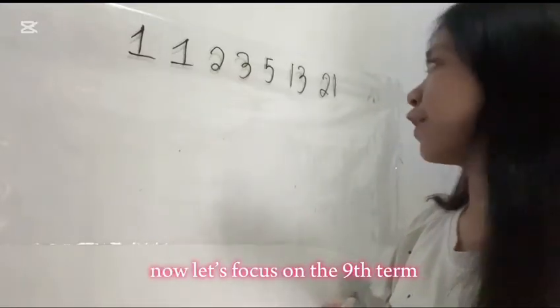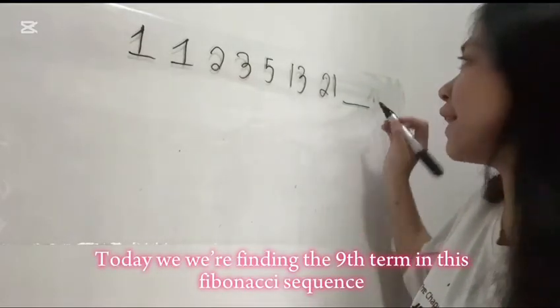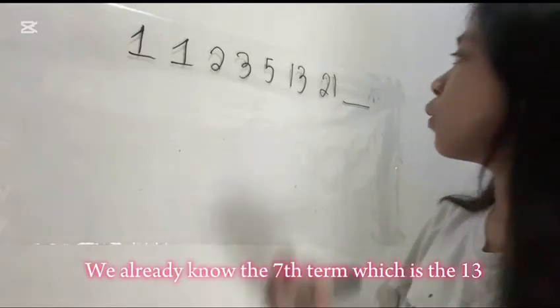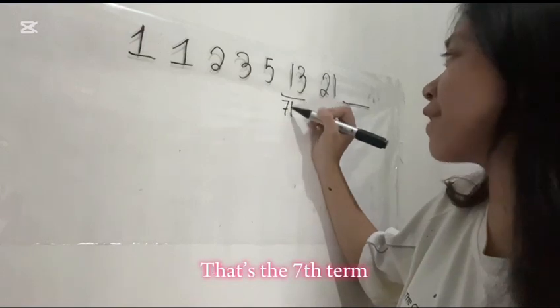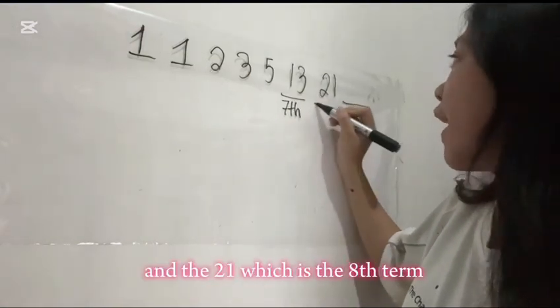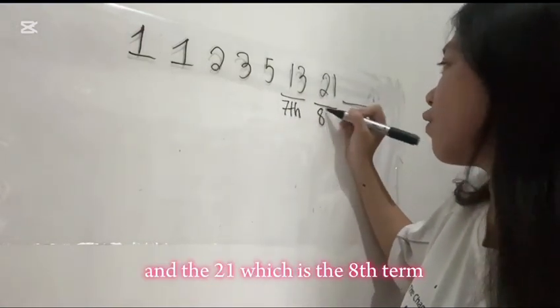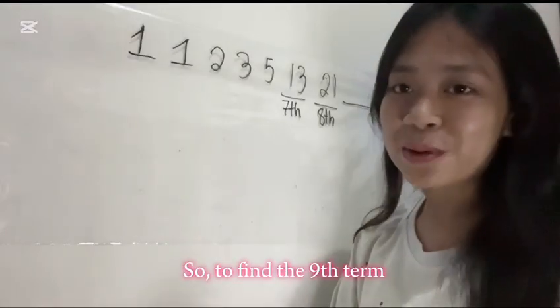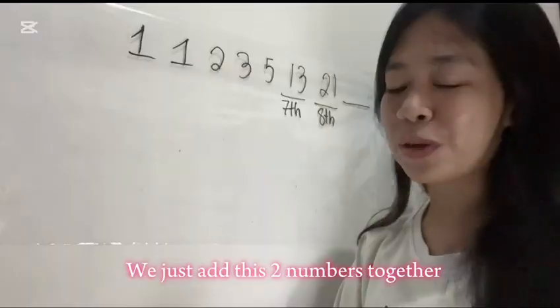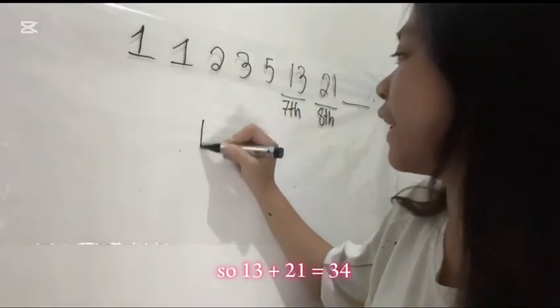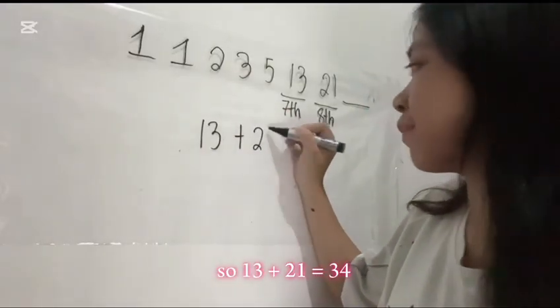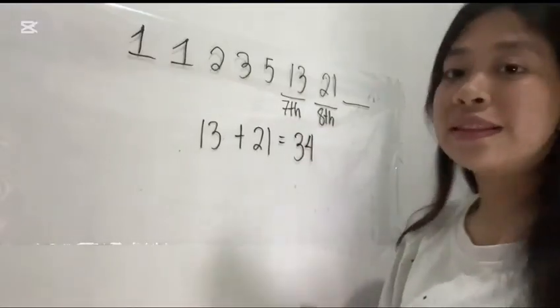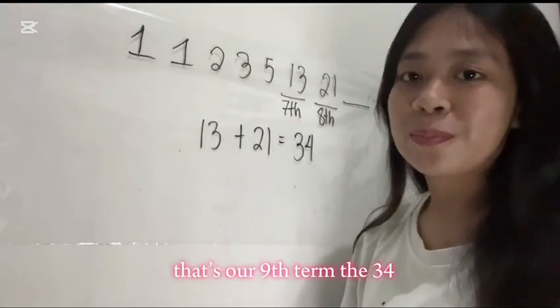Now, let's focus on the ninth term. We're finding the ninth term in this Fibonacci Sequence. We already know the seventh term which is 13, and the eighth term which is 21. So to find the ninth term, we just add these two numbers together. 13 plus 21 equals 34. And that's our ninth term, 34.